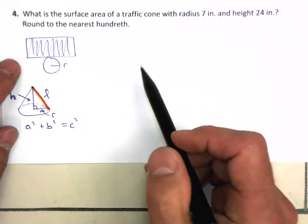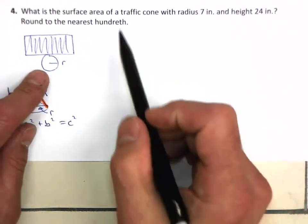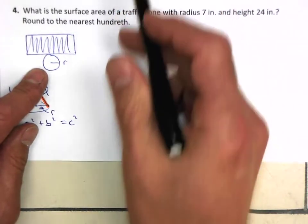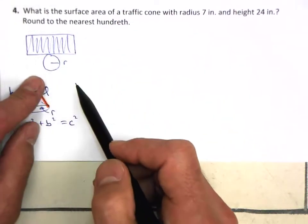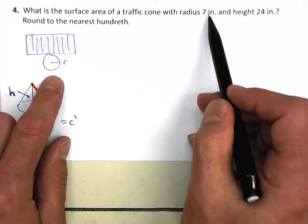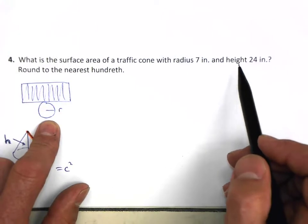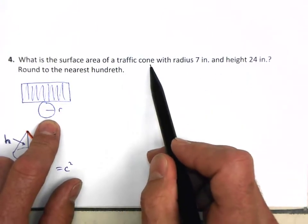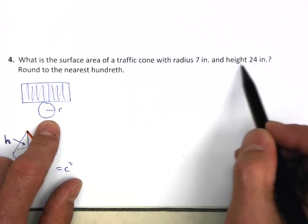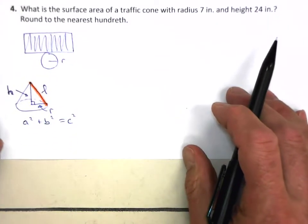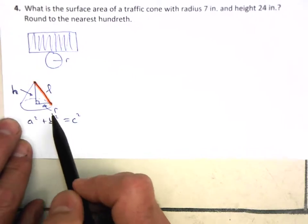Number four. Very similar to what we had just done. So same kind of a net here. The radius is seven. We got that. But now they give us the height of this traffic cone. So wait a second. That is not the slant height. That is the height of the solid, the height of the cone. So let's do some three-dimensional drawing here. You can see the cone.